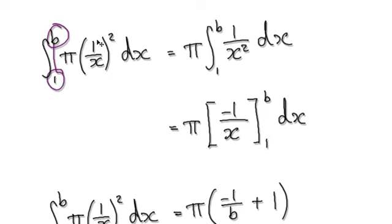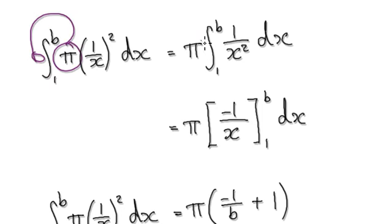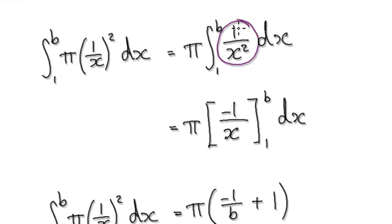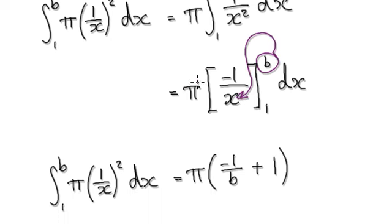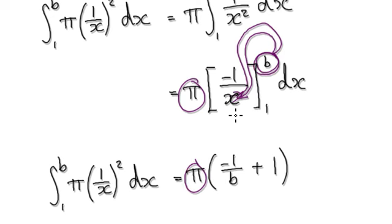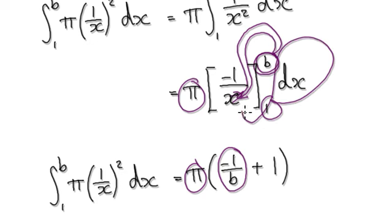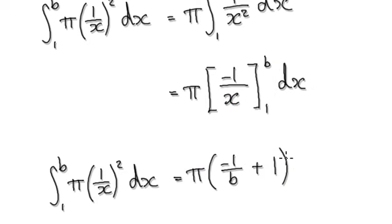So we are integrating from 1 to b. Pi is a constant, so take it out — that gives you this. Now integrate: when you integrate, it gives you this. Put b in: that gives you negative 1 over b. Put 1 in: that becomes plus 1.